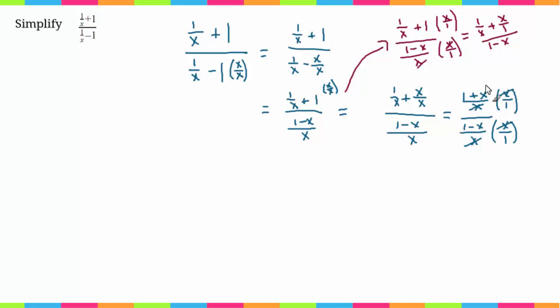Now we've canceled these denominators out, so we're left with 1 plus x over 1 minus x. This here is our final answer. I hope that video was helpful.